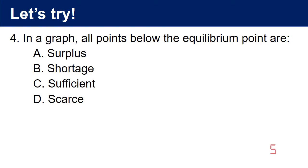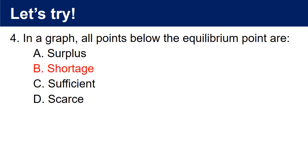Question 4: In a graph, all points below the equilibrium point are: a. Surplus, b. Shortage, c. Sufficient, d. Scarce. The answer is b. Shortage.